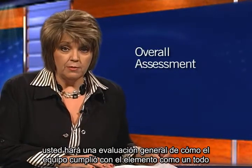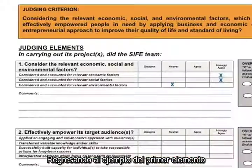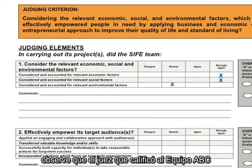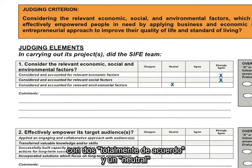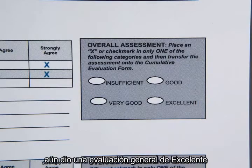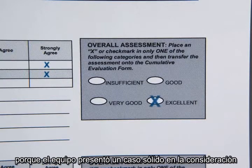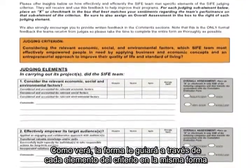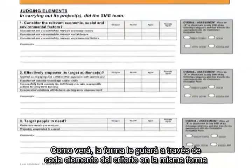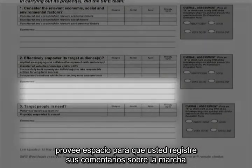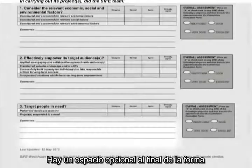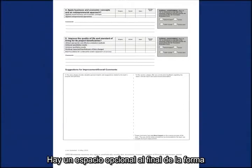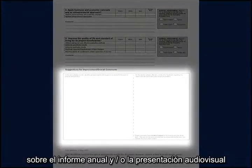After evaluating the different parts of each element, you will make an overall assessment of how the team achieved that element as a whole. Note that the judge who rated team ABC with two strong agrees and one neutral still gave an overall assessment of excellence, because the team presented a strong case for considering the factors deemed relevant. The form guides you through each element in this same manner, providing space for comments, and there's also an optional section for specific notes about the team's annual report and/or audiovisual presentation.